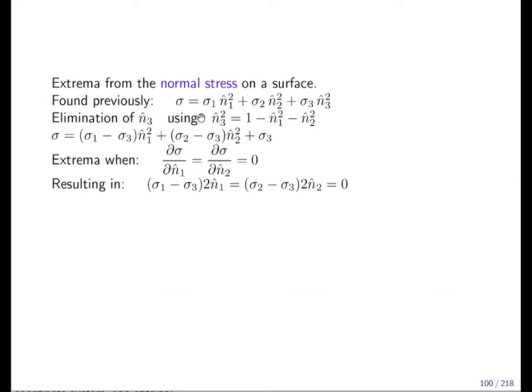Previously we found that the sigma—the normal stress—is coming from the unit vector components n one square sigma one, n two square sigma two, and n three square sigma three. And you can eliminate by using the normalization condition, so one of the components can be expressed as a function of the other two.